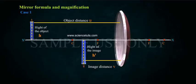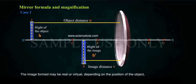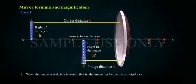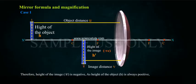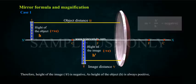Cases: The image formed may be real or virtual depending on the position of the object. Case 1: When the image is real, it is inverted — that is, the image lies below the principal axis. Therefore, the height of the image H' is negative, as the height of the object H is always positive. Therefore, M = H'/H is negative.